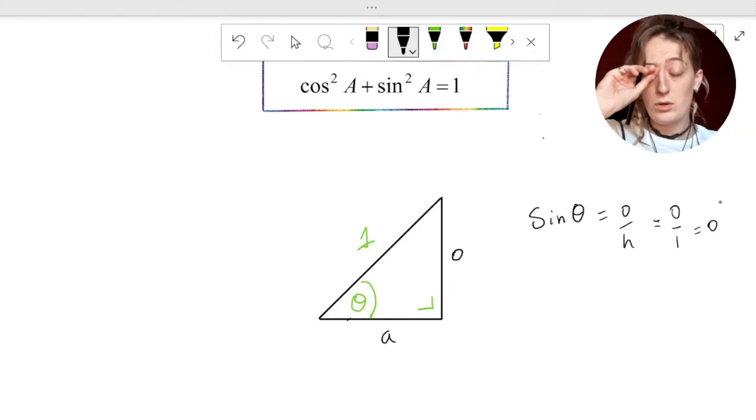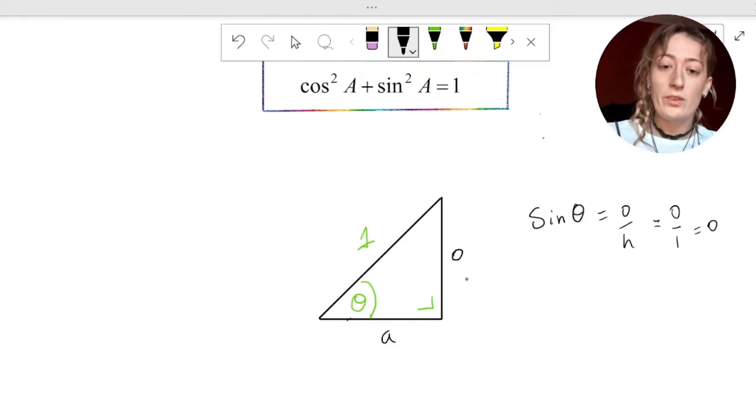O over 1 is just O. 2 over 1 is 2. 16 over 1 is 16. So we have straight away that the opposite side O is equal to sine theta.